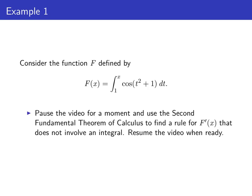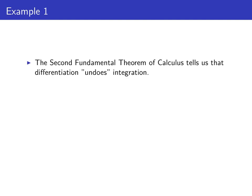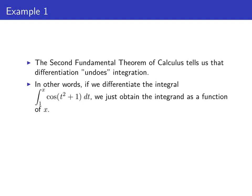This is an example to which we can directly apply the second fundamental theorem of calculus to find the derivative F prime. Go ahead and pause the video for a moment and see if you can figure out how the second fundamental theorem of calculus applies here. Recall that it tells us that differentiation undoes integration — if we integrate and then differentiate, we get back the integrand as a function of x. So the derivative of F of x is just cosine of x squared plus 1. We take the integrand and evaluate it at x.